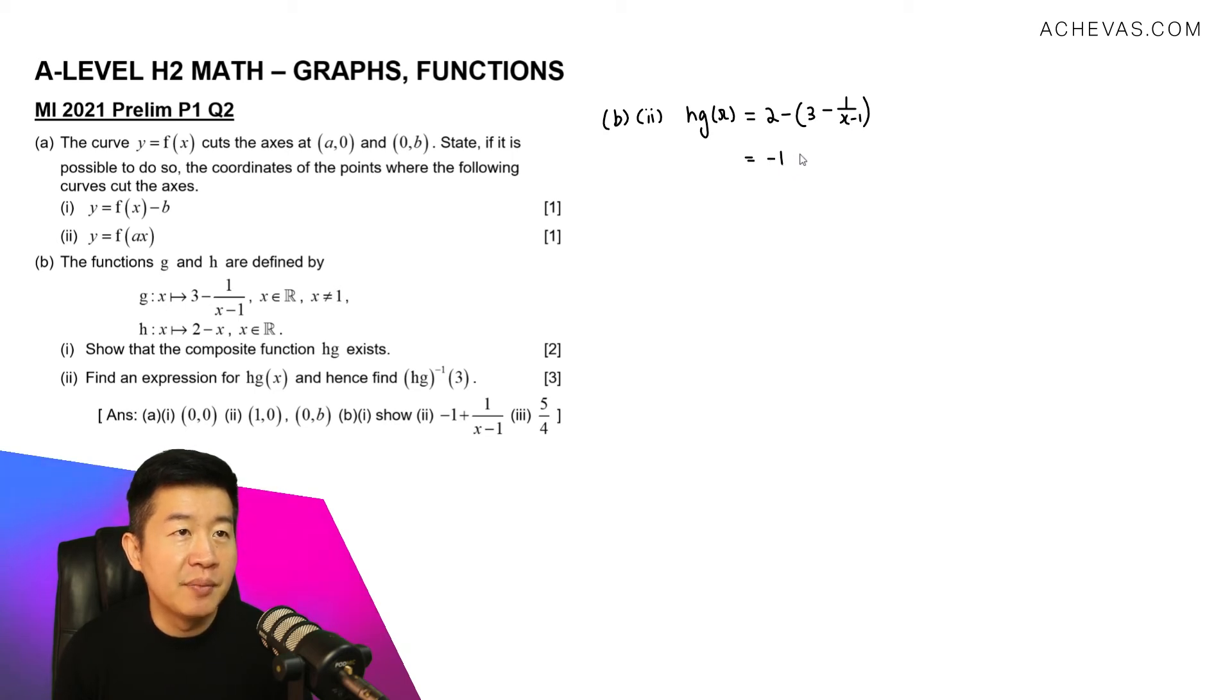So what we have gotten is minus 1 plus 1 over (x-1). And the next part is actually quite interesting.